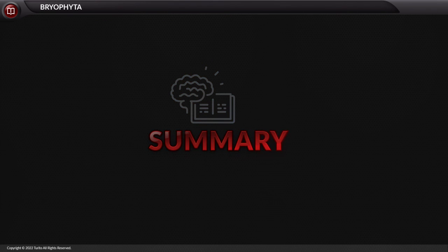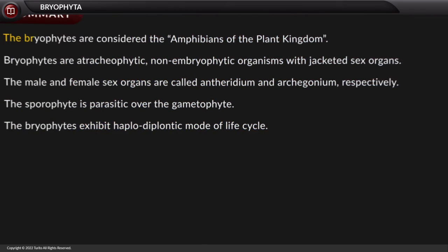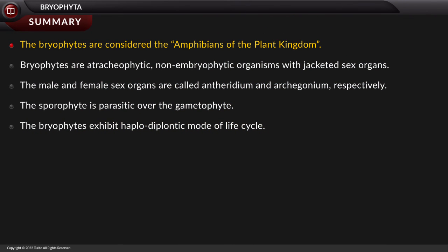In summary: bryophytes are considered the amphibians of the plant kingdom. Bryophytes are atrachophytic, embryophytic organisms with jacketed sex organs. The male and female sex organs are called antheridium and archegonium respectively. The sporophyte is parasitic over the gametophyte, and bryophytes exhibit a haplodiplontic mode of life cycle.